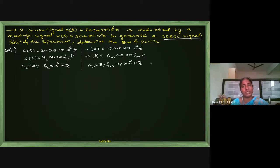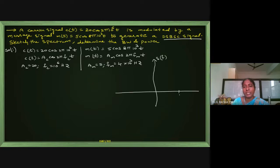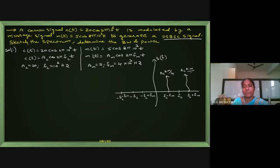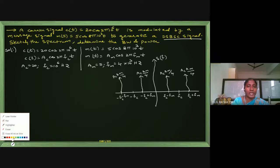For the single-tone modulation spectrum S(f) of DSB-SC, the frequency components appear at fc, fc+fm, fc−fm on the positive side, and −fc, −fc+fm, −fc−fm on the negative side. The pillar heights are Ac·Am/4 on each side. The carrier component is not present because it is DSB-SC.